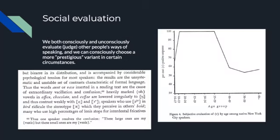Another aspect of sociolinguistics as a theory is social evaluation. We both consciously and unconsciously evaluate or judge other people's ways of speaking, and we can consciously choose a more prestigious variant in certain circumstances — and 'prestigious' is in very big air quotes, because prestige is assigned by society, not by the language. The screenshot on the left — both from Weinreich, Labov, and Herzog — is a discussion of the social evaluation of a few different words and sound variations.